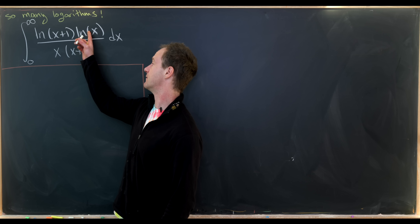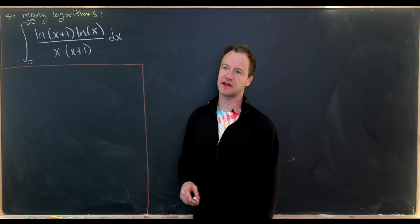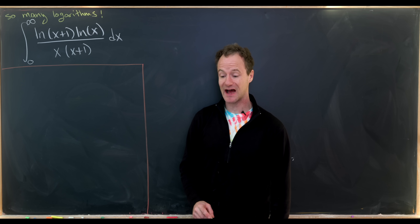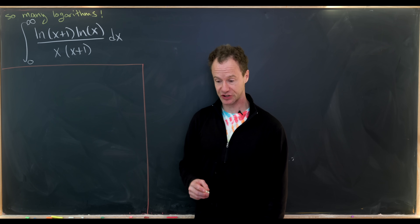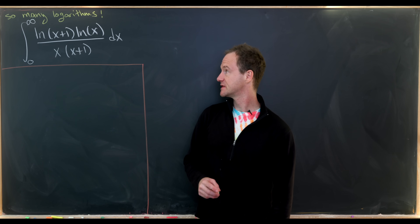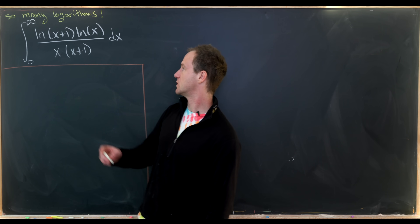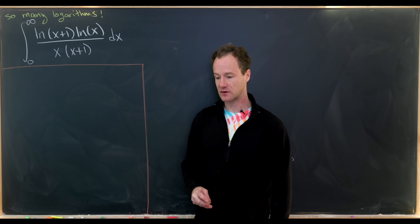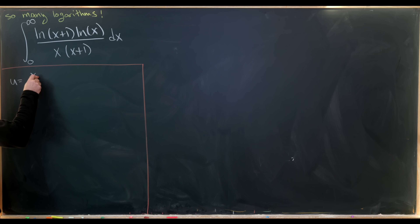The antiderivative of ln(x) over x is not so hard to calculate. That said, the definite integral would diverge, but that's not what we're looking at here — we've got a more complicated situation. Our strategy will be to make a substitution which will make (x+1) and x look fairly similar, and the substitution that will work is u = x/(x+1).